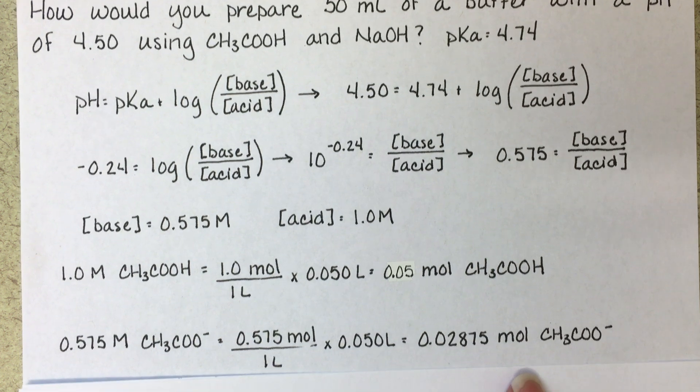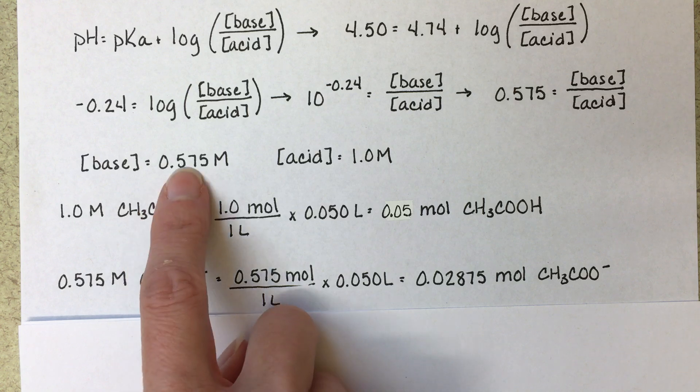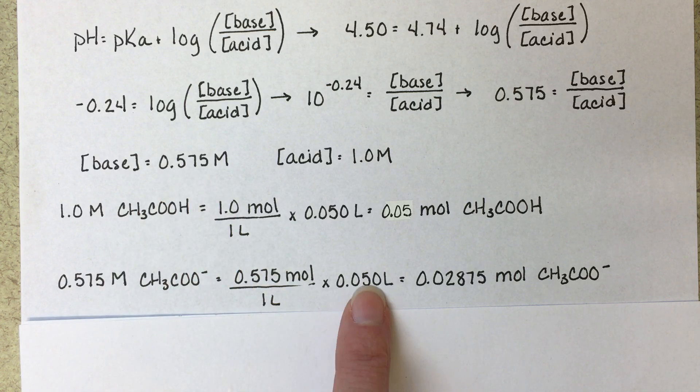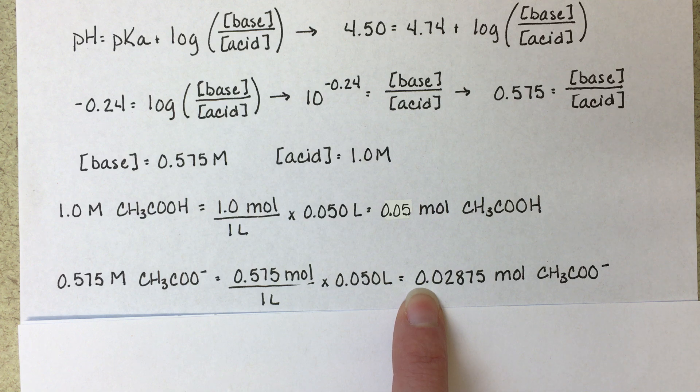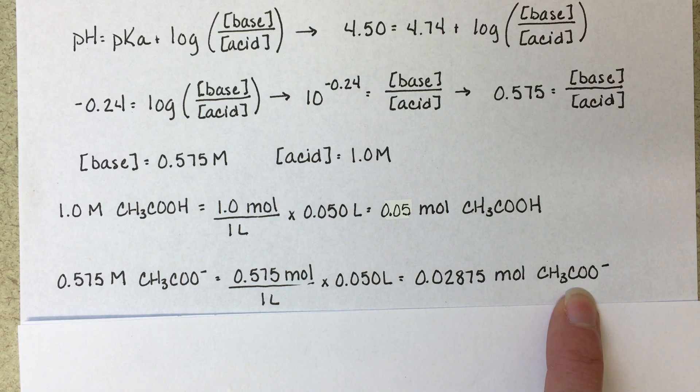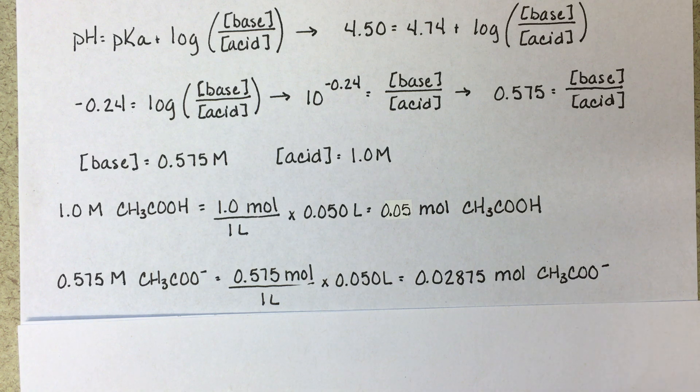For our base, we have a desired concentration of 0.575 in 50 mils, and that tells us that we want to have 0.02875 moles of acetate CH3COO- in our buffer.